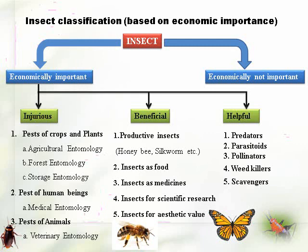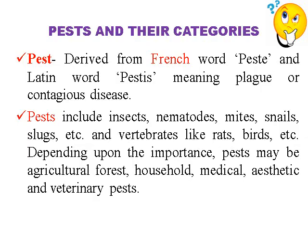So this is basically how insects are classified on the basis of their economic use. Now we will go through the definition of the pest. The word 'pest' is derived from the French word 'pestis' and the Latin word 'pastis,' meaning the plague or contagious diseases which are transmitted from one place to another. So pest includes insects, nematodes, mites, snails, slugs, etc.